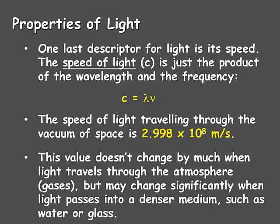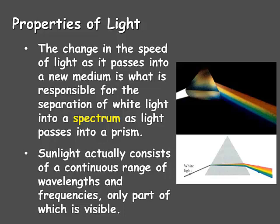One last descriptor for light is its speed. The speed of light is represented with the letter c, and it's the product of the wavelength and the frequency, so the formula is c = λν. The speed of light traveling through the vacuum of space is 2.998 × 10⁸ meters per second. This value doesn't change much through thin media like the atmosphere, but it can change significantly when light passes into a denser medium such as water or glass. That change in speed is responsible for the separation of white light into a spectrum as it passes through a prism.